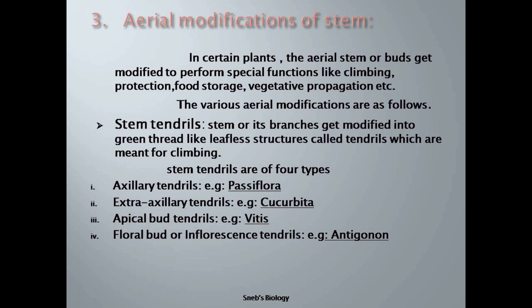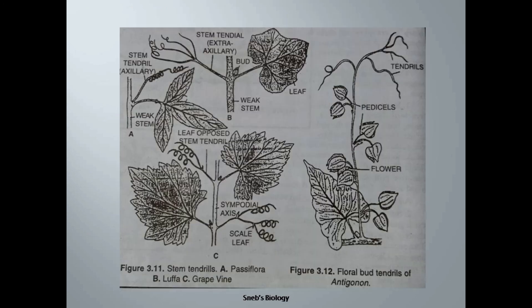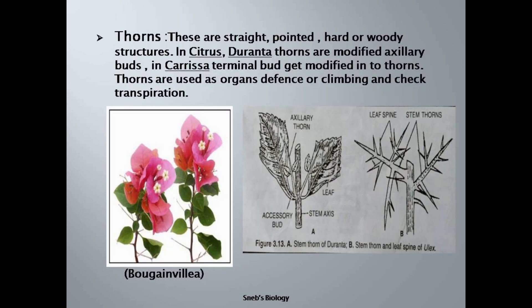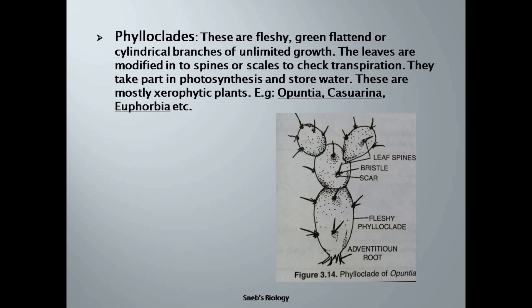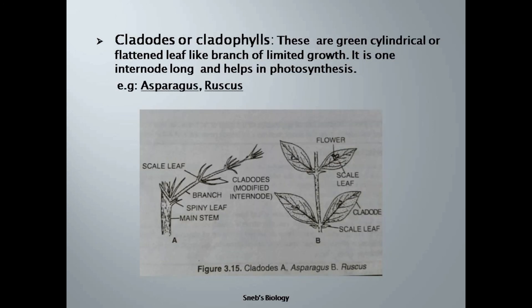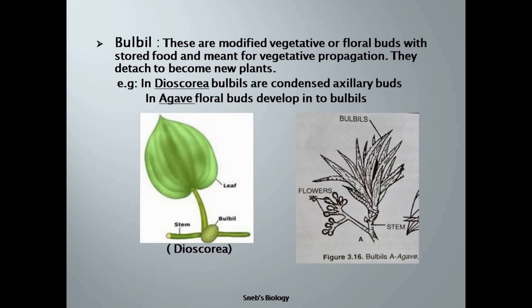So these are the aerial modifications of the stem: the stem is modified into tendrils to help the plant climb or for support; in thorns, the main function is protection; in phylloclades, the modification is for storage of food and water and performing photosynthesis; in cladodes, the main function is photosynthesis as the stem is green; and in bulbil, the stem is modified for storage of food and reproduction.